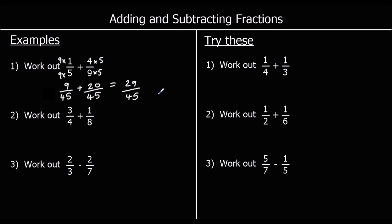Question two: work out three-quarters plus one-eighth. The easiest way to make the denominators the same is to double the top and bottom of three-quarters. Multiplying top and bottom by two gives six-eighths. So six-eighths plus one-eighth — we've got the same denominator, so we can add them. Six plus one is seven, so we've got seven-eighths.